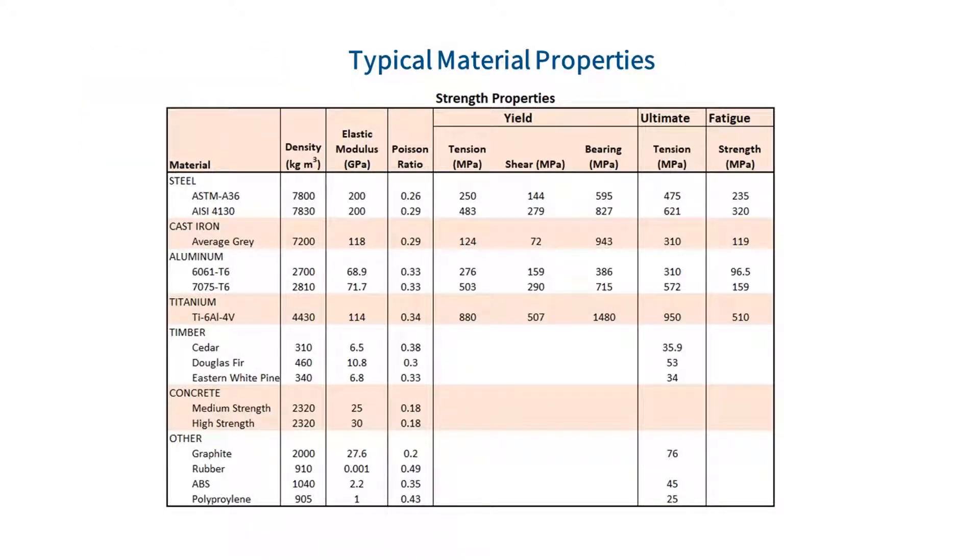In the intro to stress and strain video, we showed you an example of some typical material properties. The stress limits for a material are typically listed under strength properties. In structural design, the three most important strengths to consider are yield strength, ultimate strength, and fatigue strength. First, we will focus on explaining yield and ultimate strength.